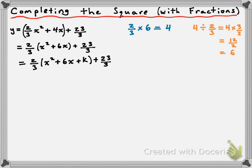That particular k value will allow the bracketed stuff to be a perfect square trinomial. Then we have plus 23 over 3, but we need to rebalance because adding k changed the expression. You might initially think we just subtract k back out, but remember that we took out 2 thirds. Since the 2 thirds out front is effectively multiplied by k, we actually changed the expression by adding 2 thirds times k. So to rebalance, we subtract 2 thirds times k.